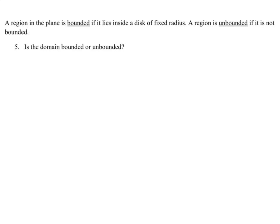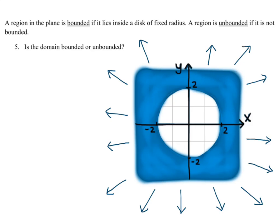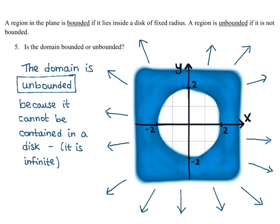A region in the plane is bounded if it lies inside a disk of fixed radius, and unbounded if it is not bounded. Looking at our domain, the shaded part goes out forever in every direction — out in x, y, and diagonally infinitely. So the domain is unbounded because it cannot be contained in a disk of fixed radius.